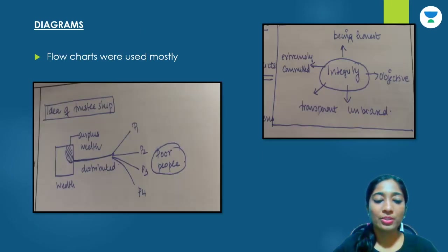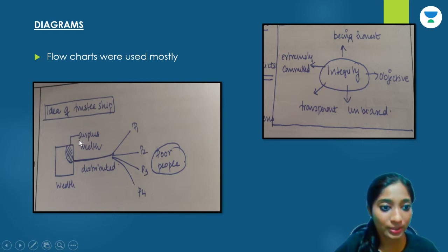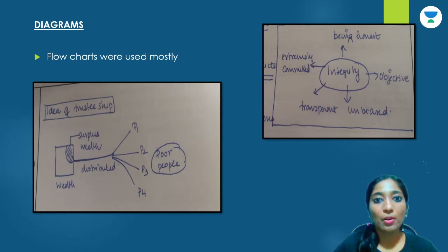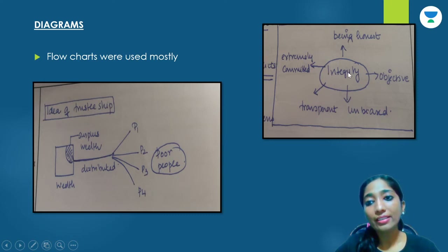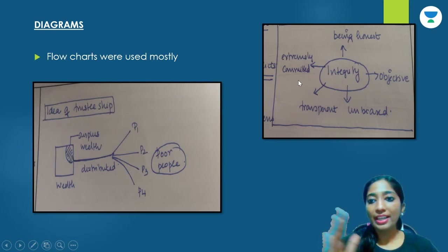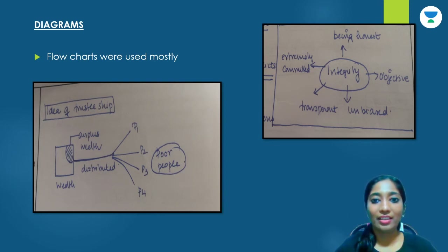Now comes the role of diagrams. Flow charts could be very well utilized for the ethics paper. These are certain examples of flow charts I had drawn for my mocks. For example, this is the idea of trusteeship — if any question is asked about trusteeship, I drew surplus wealth being distributed to poor people. Similarly, a flow chart could be done for integrity — what integrity means: being honest, objective, unbiased, transparent, extremely committed. Drawing such diagrams in between makes the answer look very good and the presentation part extremely attractive.